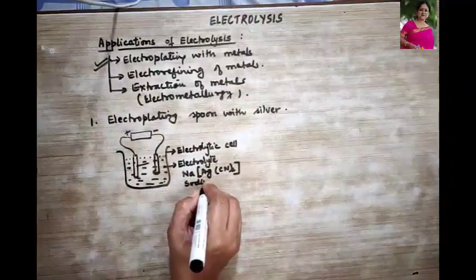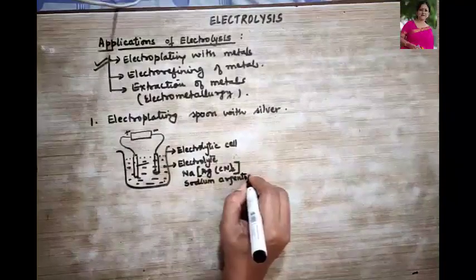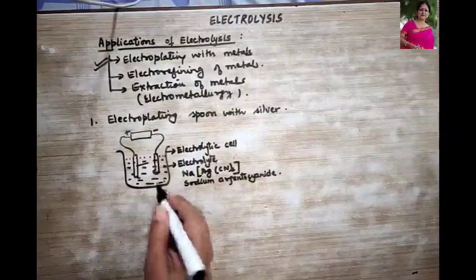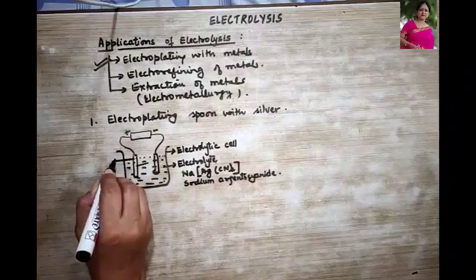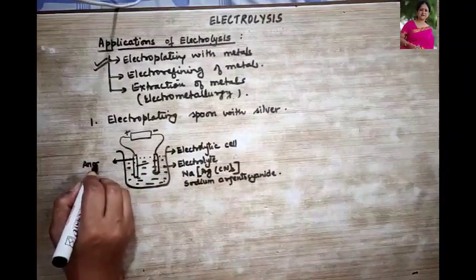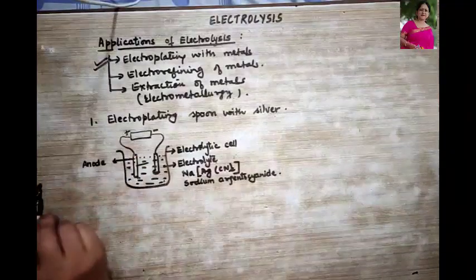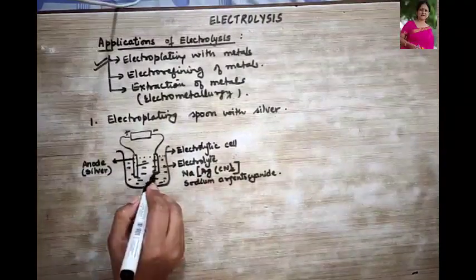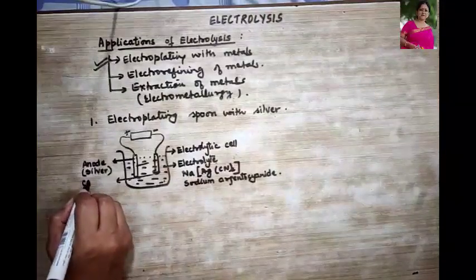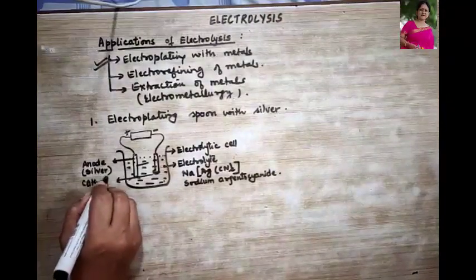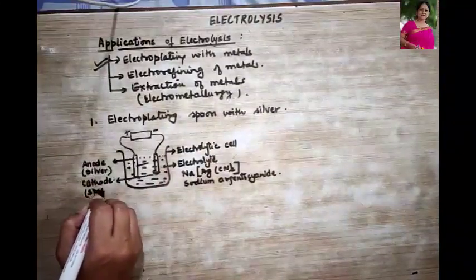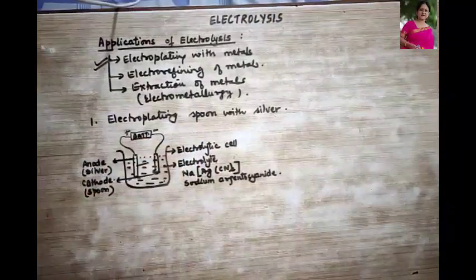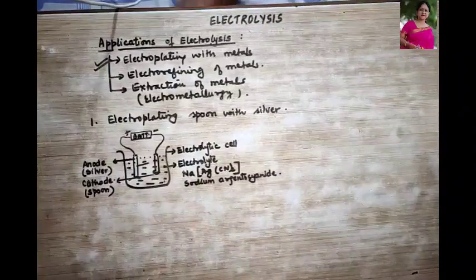The electrolyte is sodium argentocyanide. The anode is made up of silver — it is a positive electrode. The cathode is the spoon, the article you want to electroplate. They are connected to the battery. The ions present in the electrolyte are: sodium ions, silver ions, cyanide ions, hydrogen ions, and hydroxyl ions.